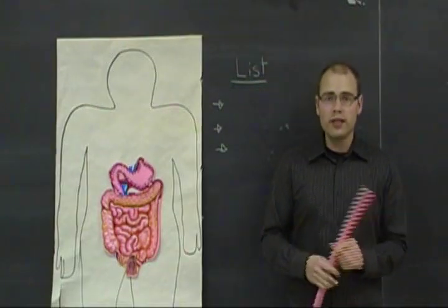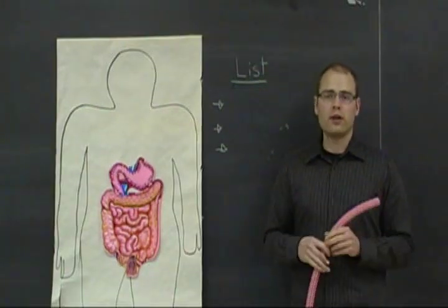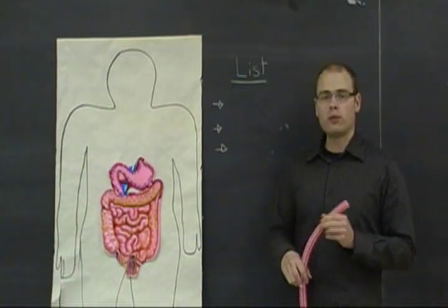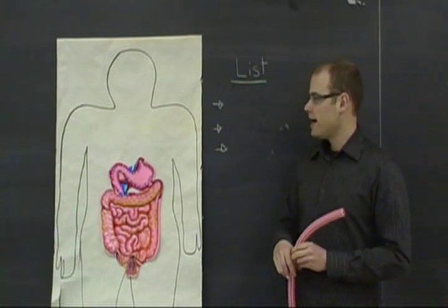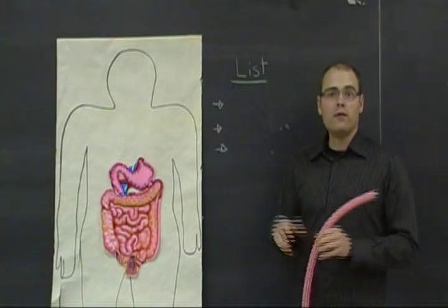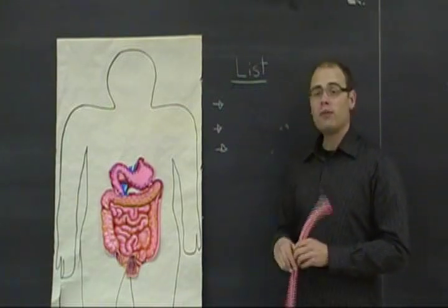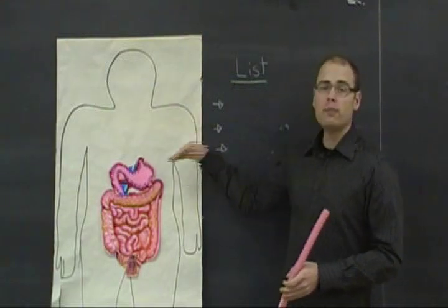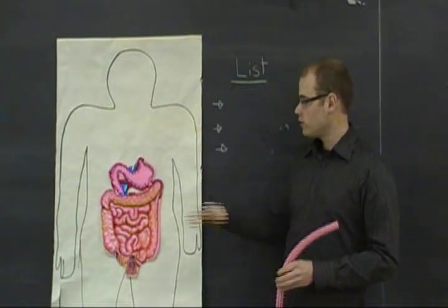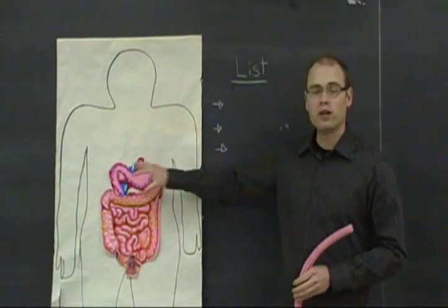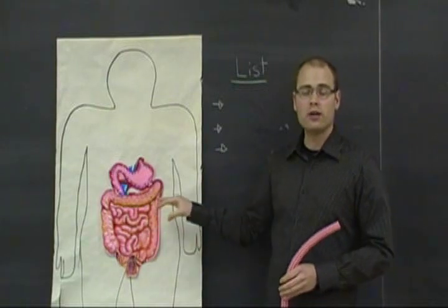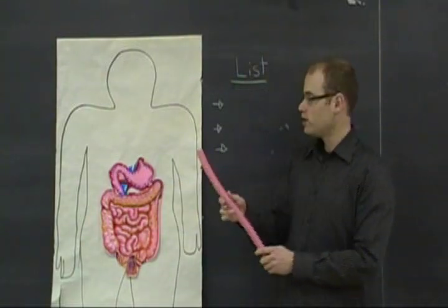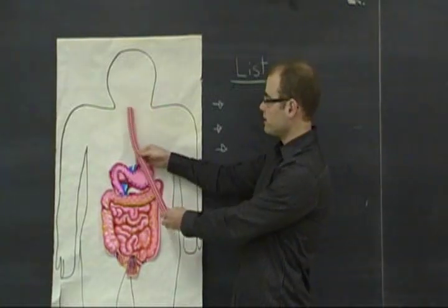Once your students have completed their research and have become experts on their system, they can create a visual interpretation of their findings by outlining the body of a volunteer within their group. This is a pretty popular way of showcasing each of the body parts within a system. You can have your students label these as well. They can get really creative as to how they are going to represent them within the body, even using maybe three dimensional objects or different crafts to represent things.